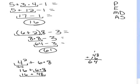So 8 plus 6 is 14. Carry the 1. 4, 5, 6. So my answer is 64. And that's how you do order of operation problems.